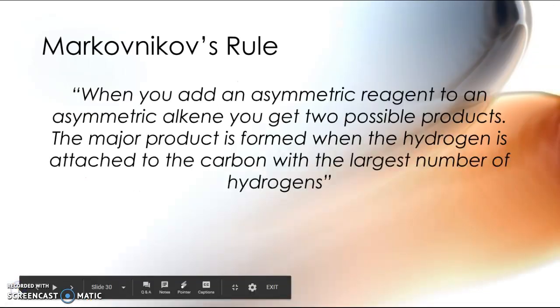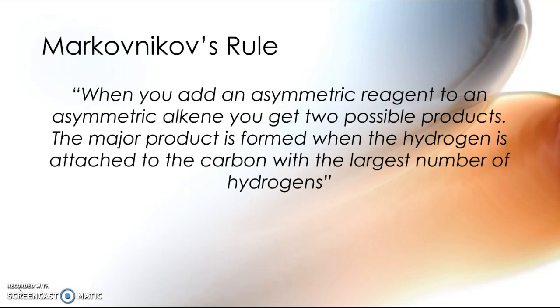So now on to Markovnikov's rule. Markovnikov's rule states that when you add an asymmetric reagent to an asymmetric alkene, you can have two possible products. And the major product is formed when the hydrogen is added to the carbon that has the largest number of hydrogens.